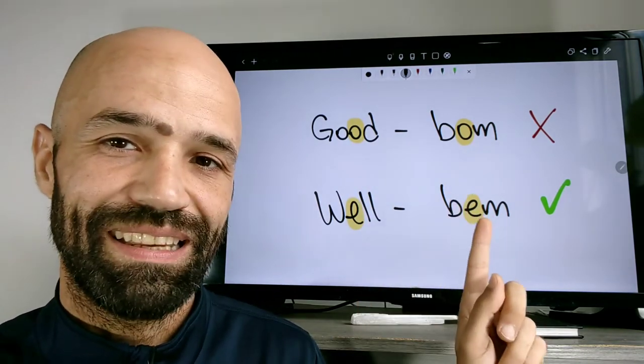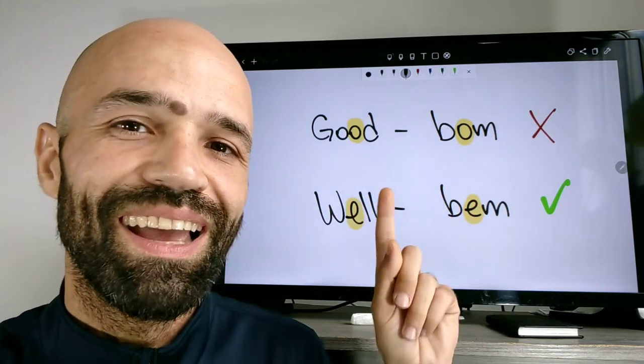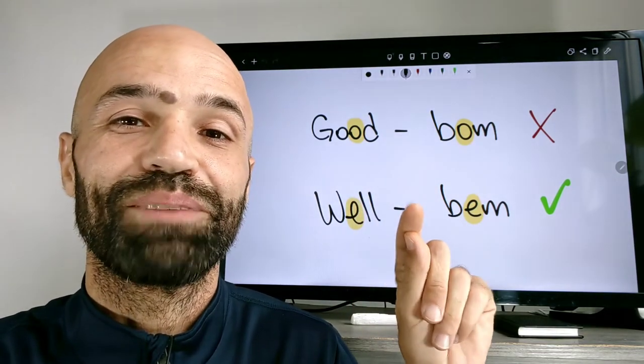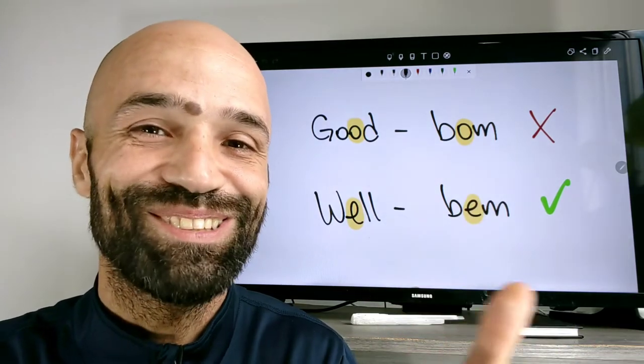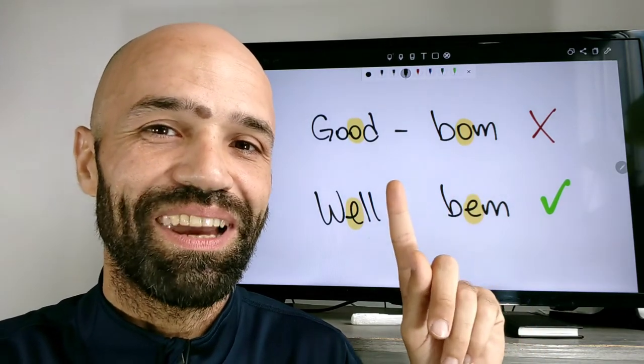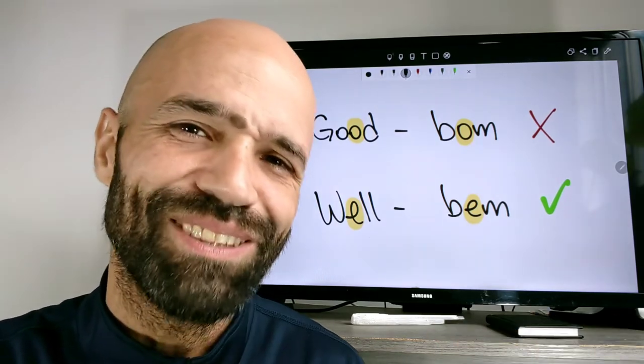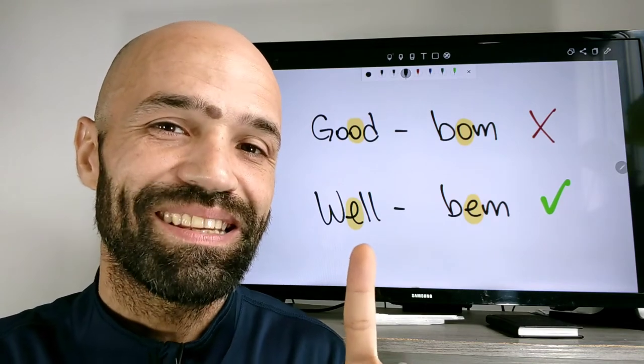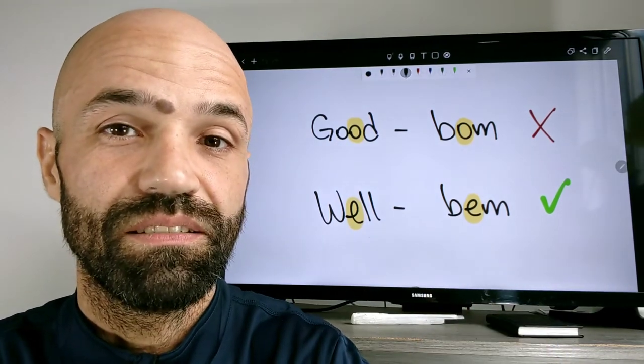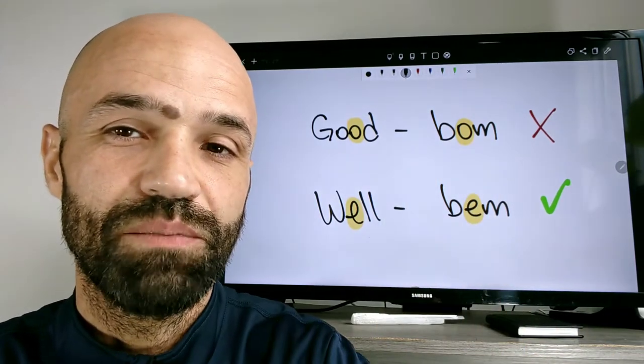Good é bom. Well é bem. Então lembrando que quando alguém te pergunta How are you, é muito usado I'm good, okay? É para as pessoas que recebem presentes no Natal, né? As pessoas que são boas, okay? Então quando alguém te pergunta How are you, você fala I'm good. É usado mas é errado, né? É para ser I'm well, eu estou bem, okay? Só para vocês saberem a diferença, ok? Então usa o o com referência e o e também. Okay?